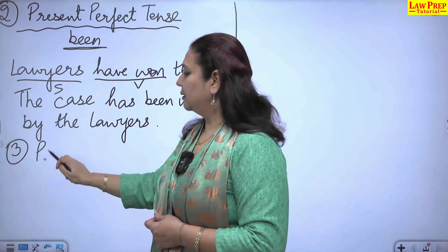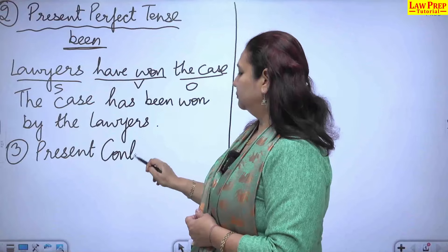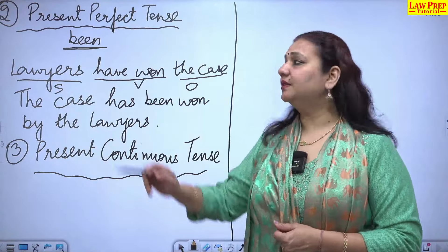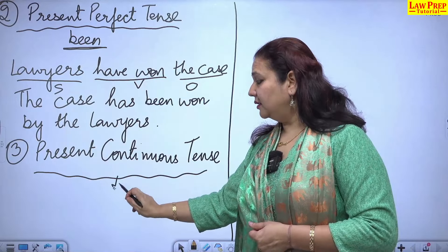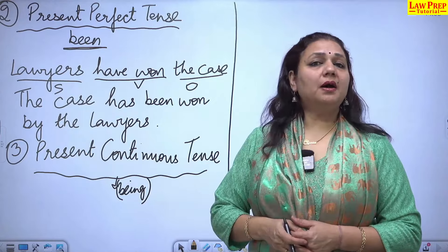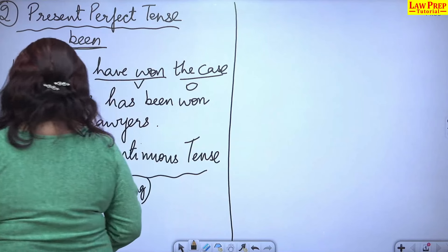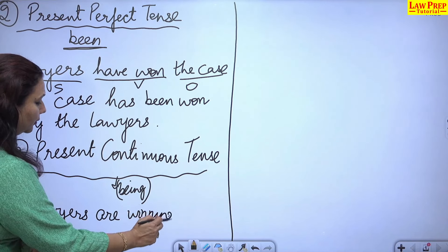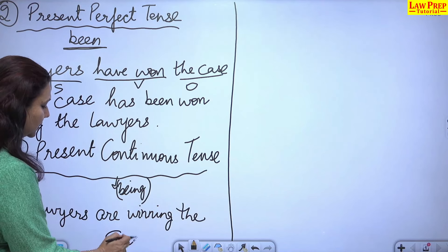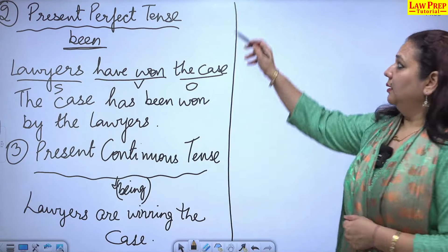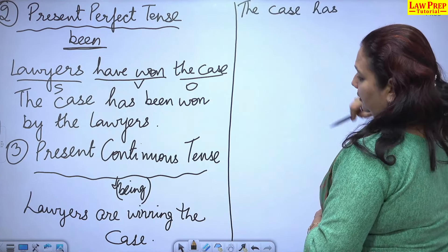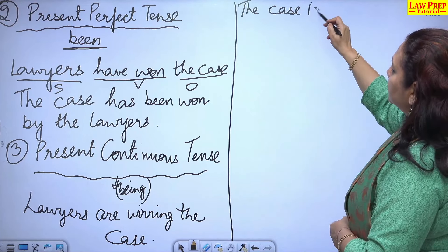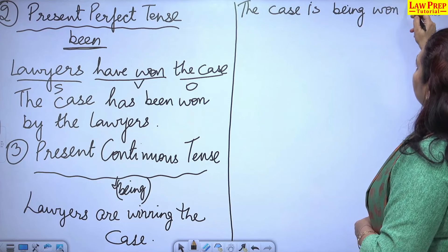Now, for present continuous tense, we use the word 'being' as the helping verb. If the sentence is 'lawyers are winning the case,' we change it as per subject, verb, and object. The answer would be: 'the case is being won by the lawyers.' Note that 'case' is singular, so we use 'is.'